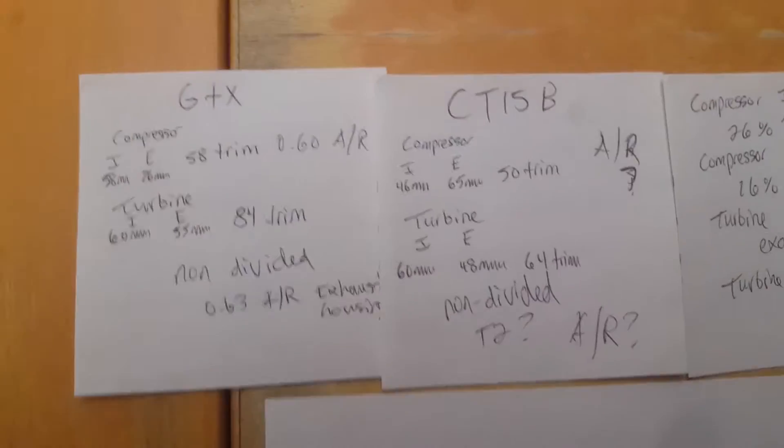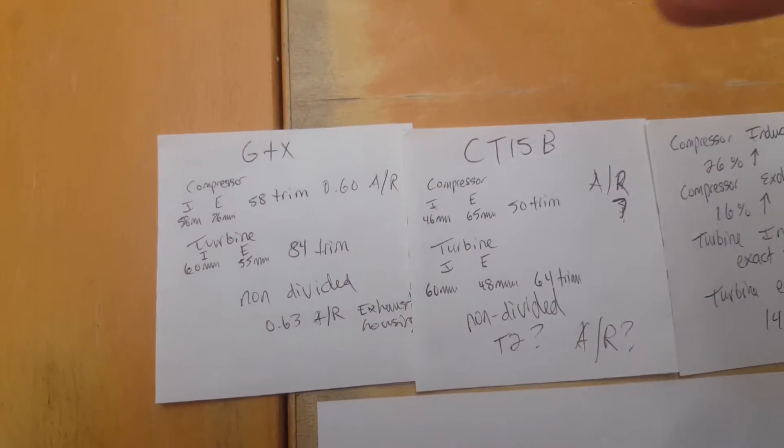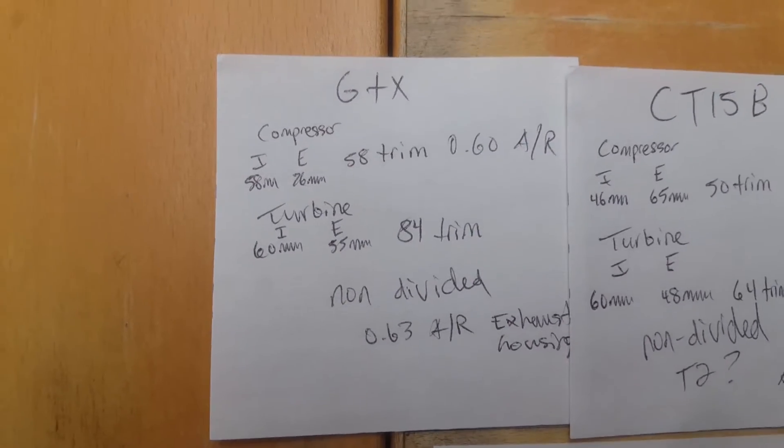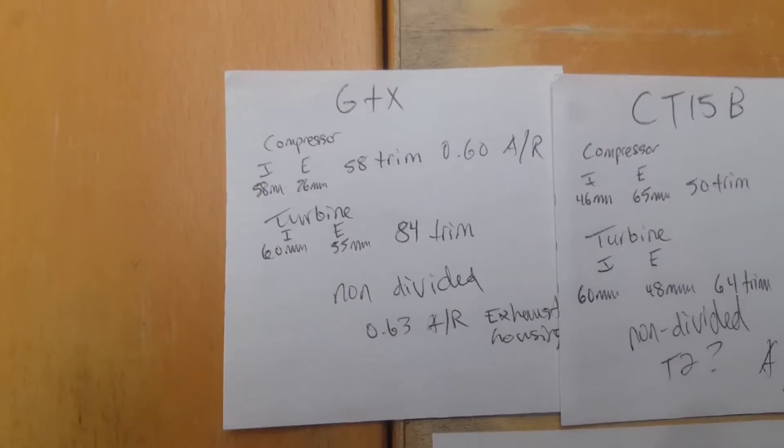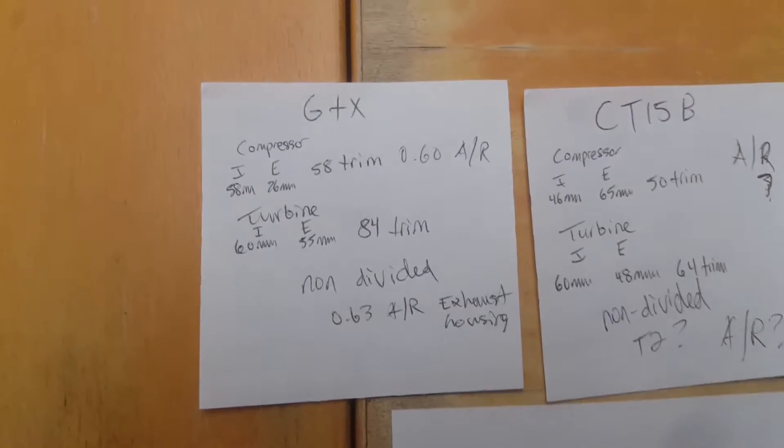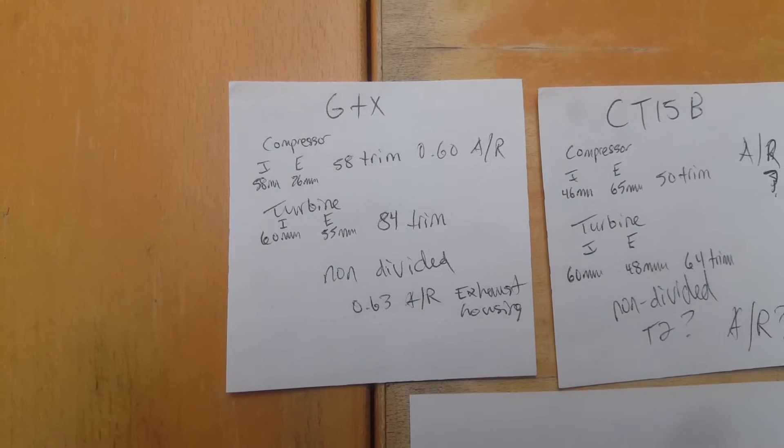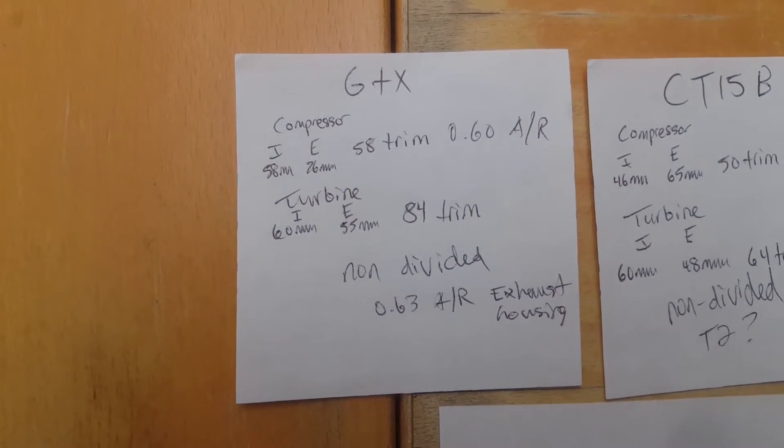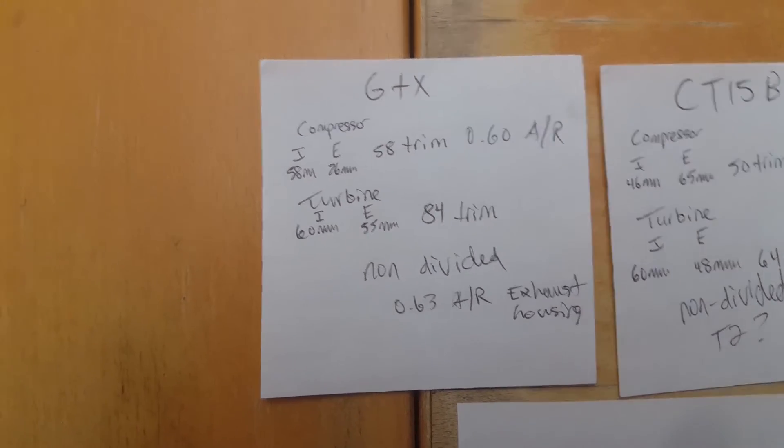So basically, from the information I've dug up, I have the GTX, the compressor inducer and ex-inducer information, 58 versus 76, a 58 trim, 60 AR. The turbine is 60, 55, 84 trim, non-divided. I have the 63 AR exhaust housing, non-divided. It's a T3.